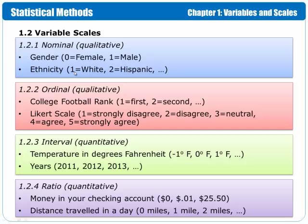Here's some more examples. We have nominal with gender, zero equals female, one equals male. Ethnicity, you might see it with one equals white, two equals Hispanic, three equals, you know, and so forth. And so, the numbers are just placeholders. They're just grouping numbers. There's not any type of order or magnitude to them.